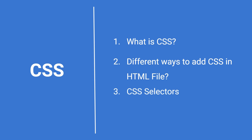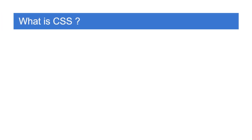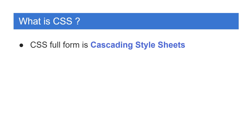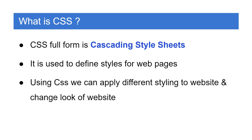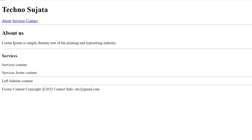Let's start with what is CSS. The full form of CSS is Cascading Style Sheets. It is used to define styles for web pages. Using CSS we can apply different styling to a website and change the look of the website. Suppose you have created an HTML file using HTML elements, but without CSS that file will look plain. Using CSS we are just adding or applying styling to those HTML elements.